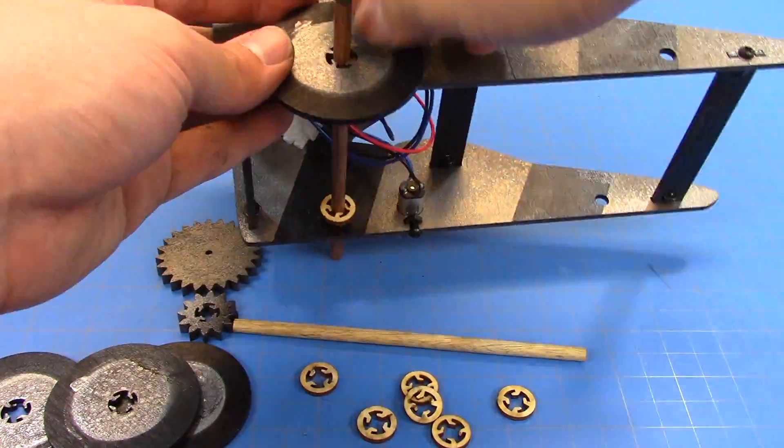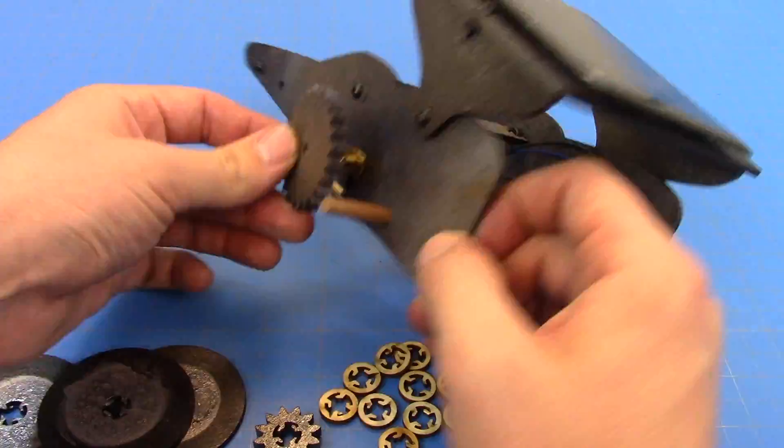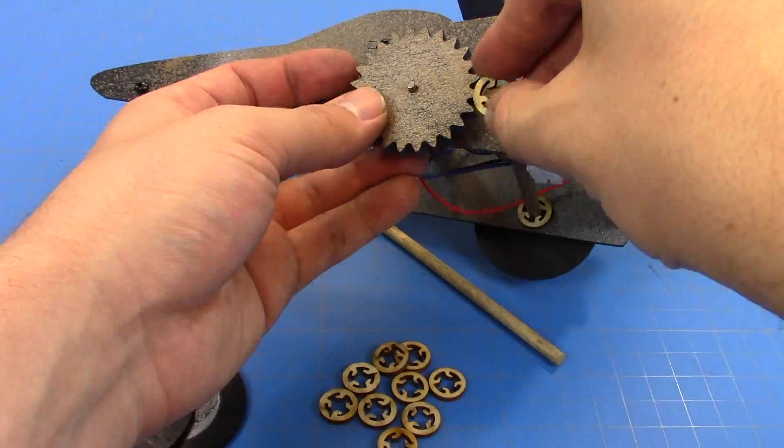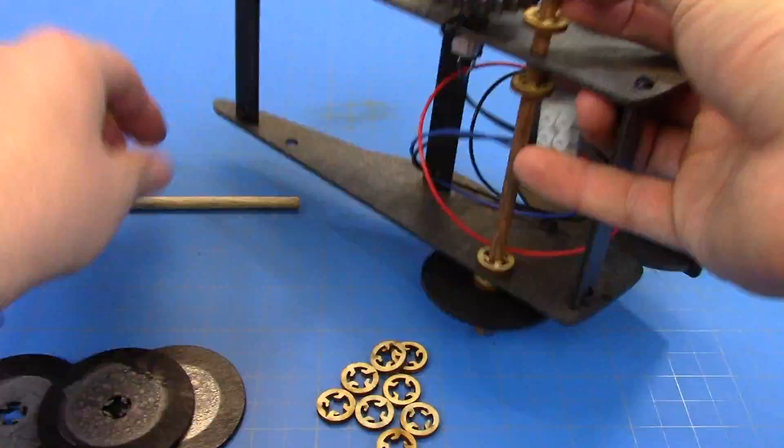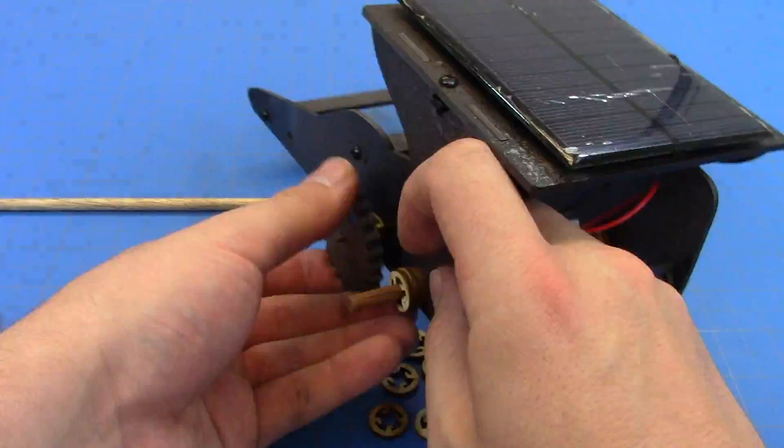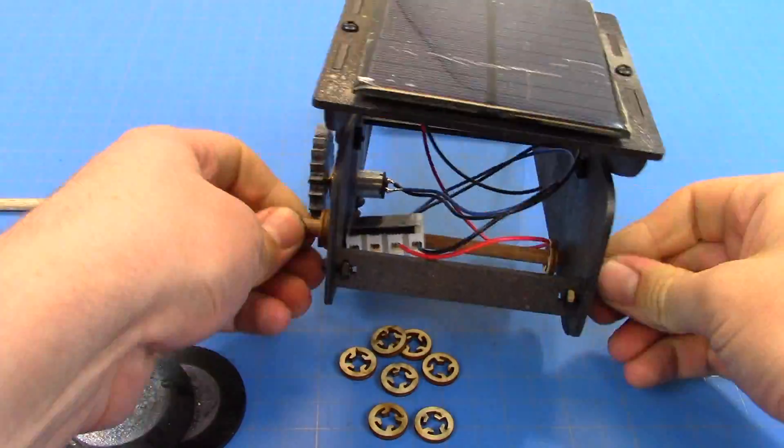These small parts have a tendency to break easily, so we've made sure to include plenty of extras. In a two-gear system, the drive gear turns in the opposite direction from the load gear. This is why we hooked up our motor to turn in reverse.